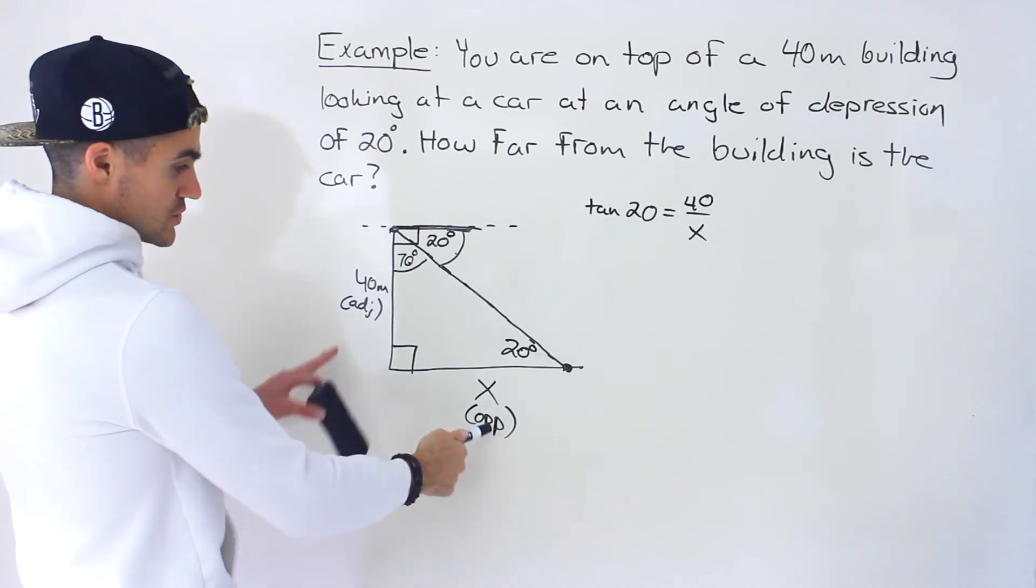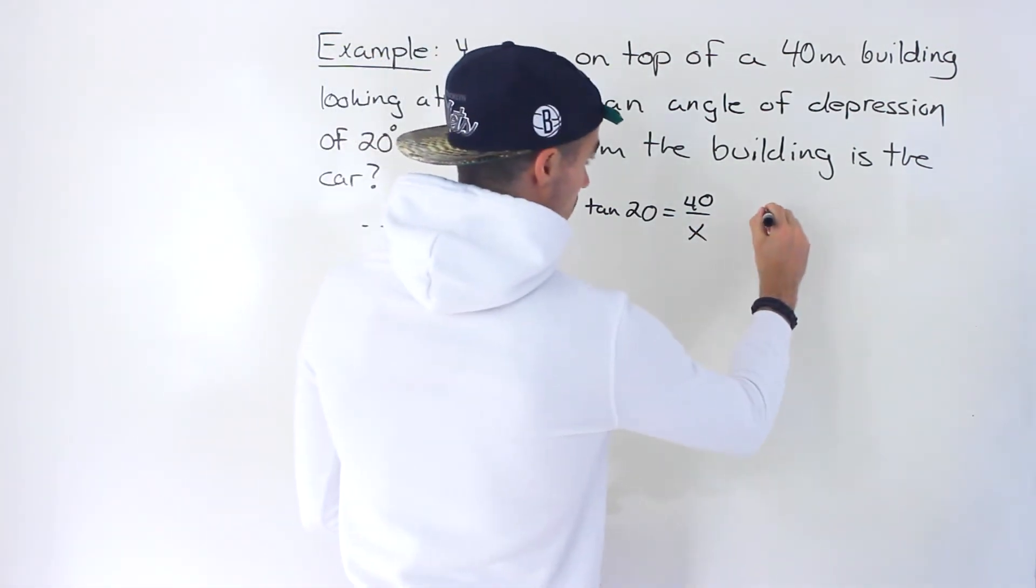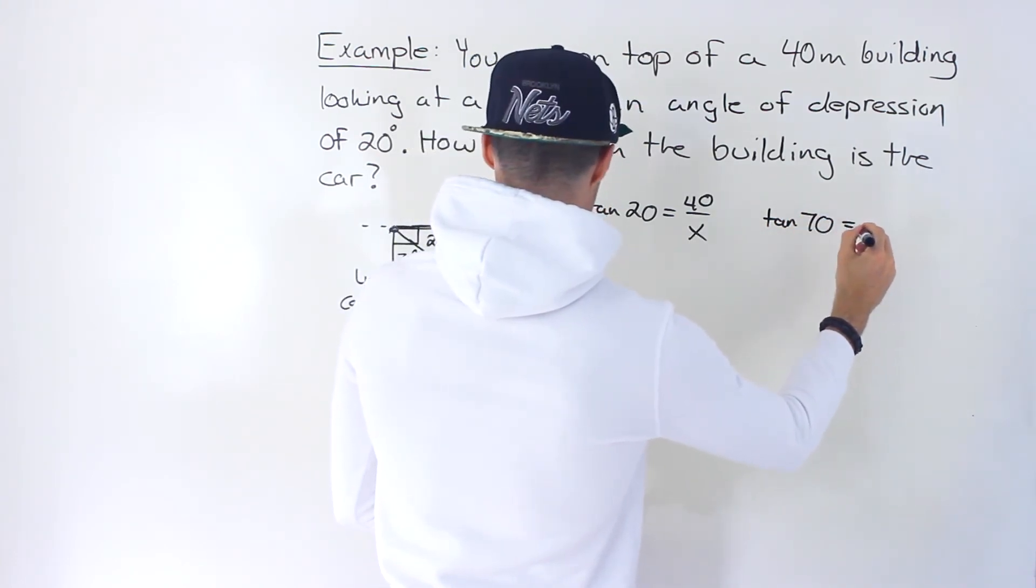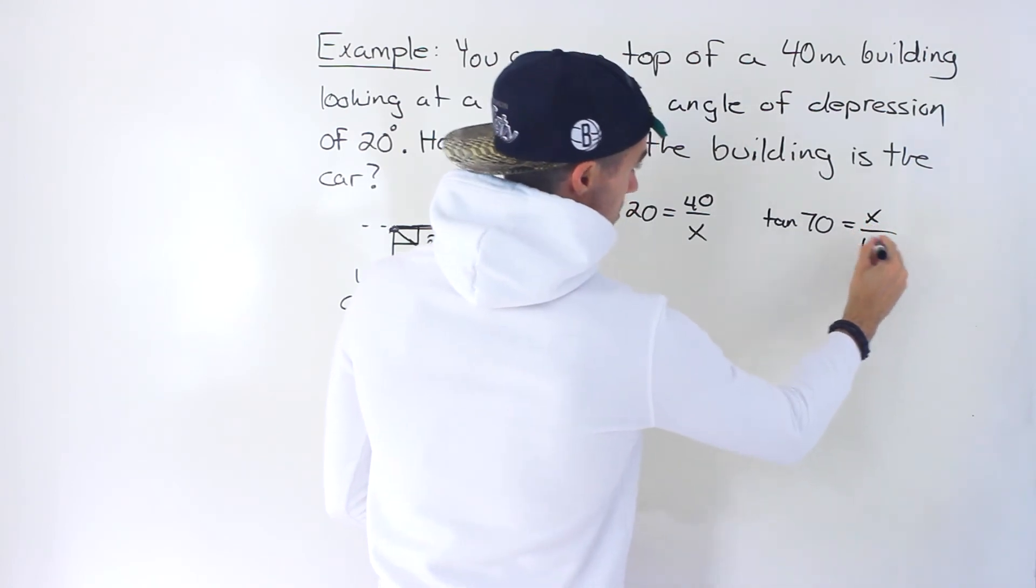And so you're still dealing with an opposite and an adjacent, so you would still use tan. So you'd go tan of 70 equals the opposite side over the adjacent side.